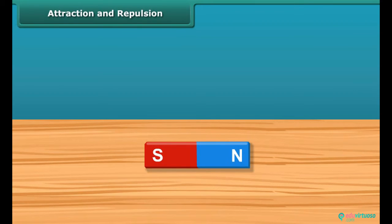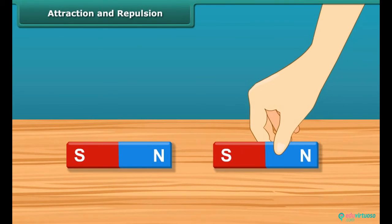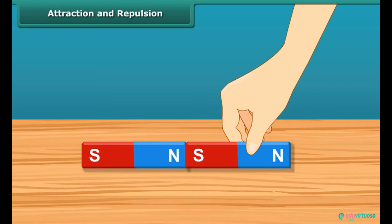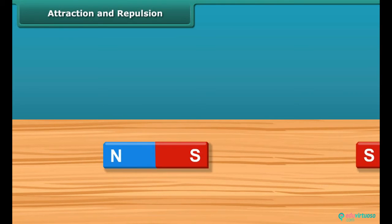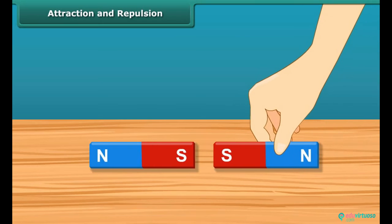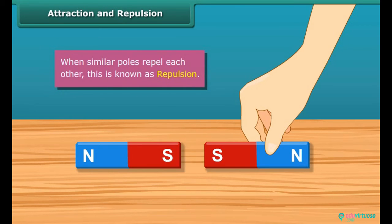Attraction and repulsion. Now that you know about poles of a magnet, let us look at the attraction and repulsion properties. When the south pole comes in contact with the north pole, they get attracted to each other — this is better known as opposite poles attracting each other. Similarly, when the south pole comes in contact with another south pole, they do not attract each other; in fact, they repel each other. This is better known as similar poles repelling each other.